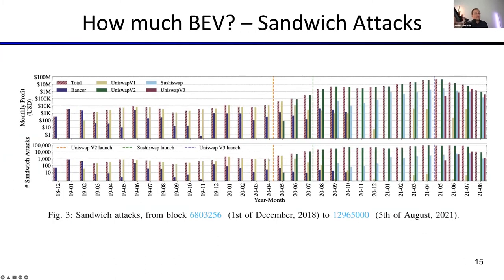Looking at historical data on approximately 5 DEXes — Bancor, Uniswap, SushiSwap — on a log-scale Y-axis, we found a monthly profit beyond 10 million US dollars that sandwich attackers have been able to extract. These amounts increased significantly after the emergence of Uniswap V2, which remains quite dominant even after the launch of Uniswap V3.